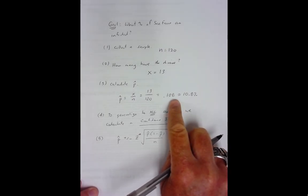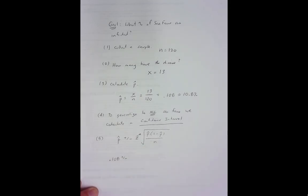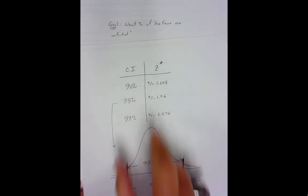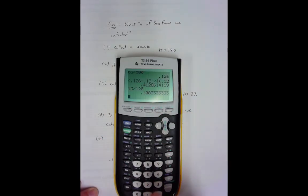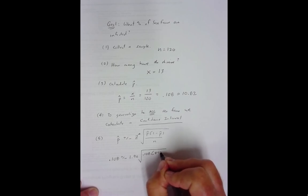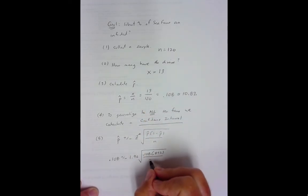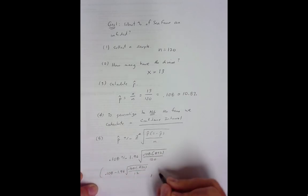My p-hat is 0.108 plus or minus my z-star. So we're going to do a 95% confidence interval. Z-star is 1.96 times the square root p-hat times 1 minus p-hat over N which was 120 sea fans. I'm going to do two problems here. We're going to do the minus first. We're going to do the plus second.